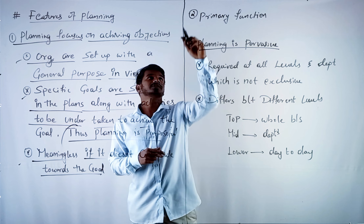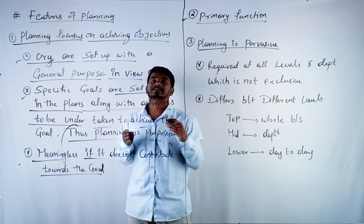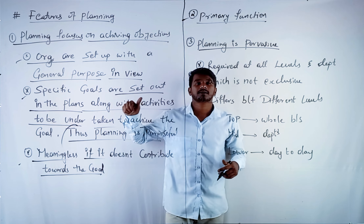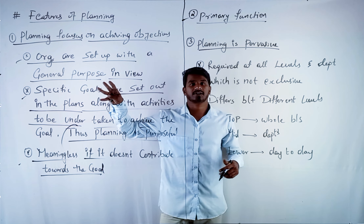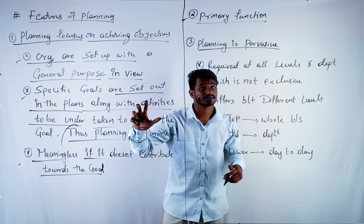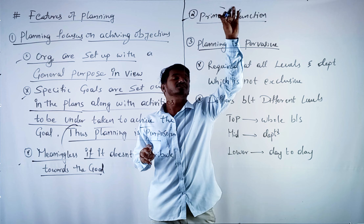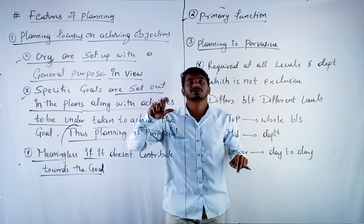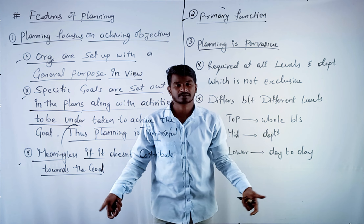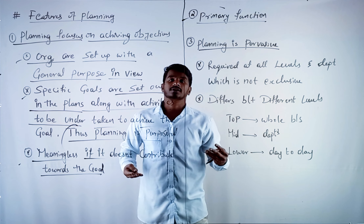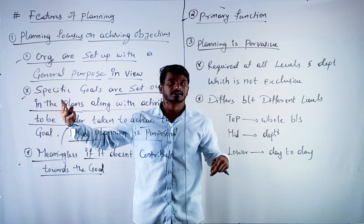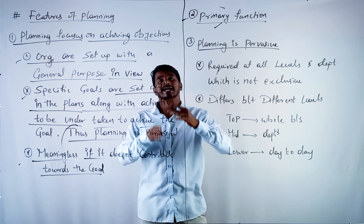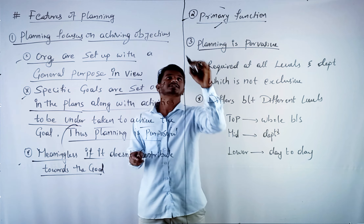The second feature is that planning is a primary function. We have five management functions: planning, organizing, directing, controlling, and staffing. Out of these five, if planning is not there, nothing else will work. If there is no plan, there is no business. Then there is no work for organizing, staffing, controlling, or directing. Planning is a primary function and it is the base for business.